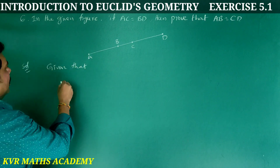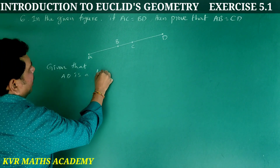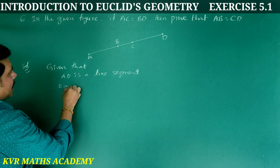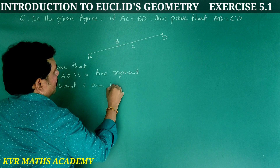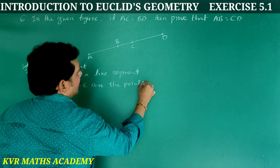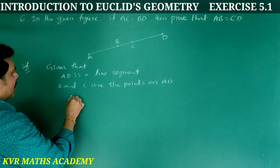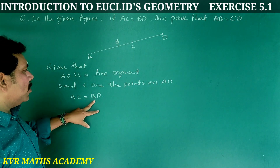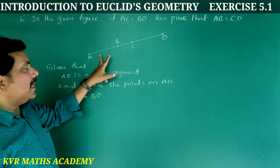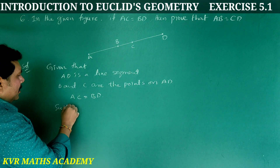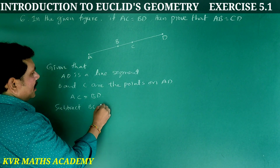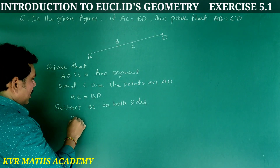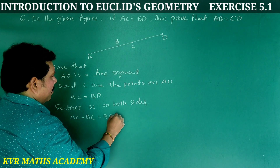Solution: Given that AD is a line segment and B and C are points on AD. Also, AC is equal to BD. Subtract BC from both sides: AC minus BC equals BD minus BC.